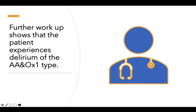Orientation is often assessed as part of a mental status exam to evaluate cognitive functioning and to screen for dementia. It refers to a person's level of awareness of person, place, time, and situation. When assessing for orientation, we ask basic questions like their name, where they are, if they know the date and time, and if they know why they are there. This helps us determine if the patient is alert, awake, and oriented. In this case, the patient is alert, awake, and oriented to person only, abbreviated as AA&O×1.